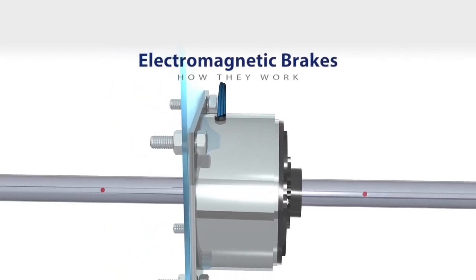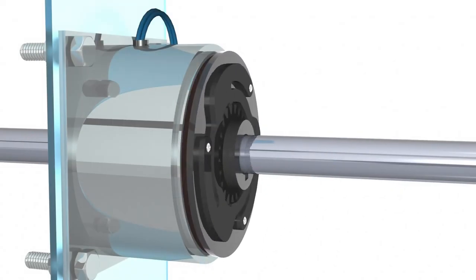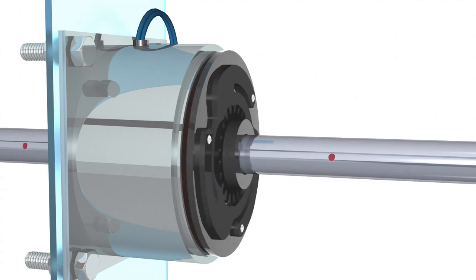Electromagnetic brakes. The majority of electromagnetic brakes use a single plate friction surface to slow or stop motion. Although there are multiple disk designs, all function in a similar manner.